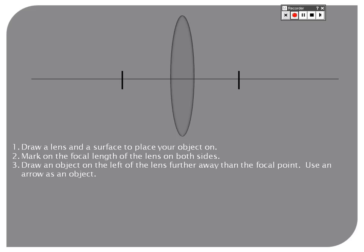Now, draw an object on the left of the lens further away than the focal point, use an arrow as an object. So I've got an arrow on the left hand side there. Remember that the arrow is like a point source and that light comes around from every direction from the tip of that arrow. We're interested in two rays of light from that arrow.